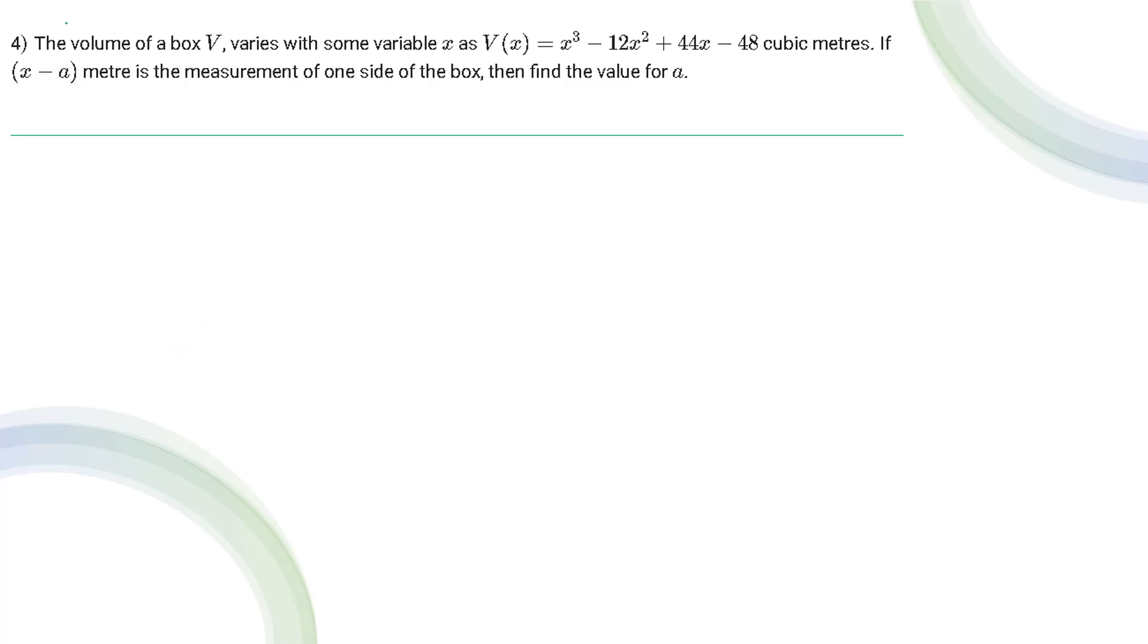Question number 4 is saying the volume of a box V varies with some variable x as this equation. If x minus a meter is the measurement of one side of the box, then find the value for a.